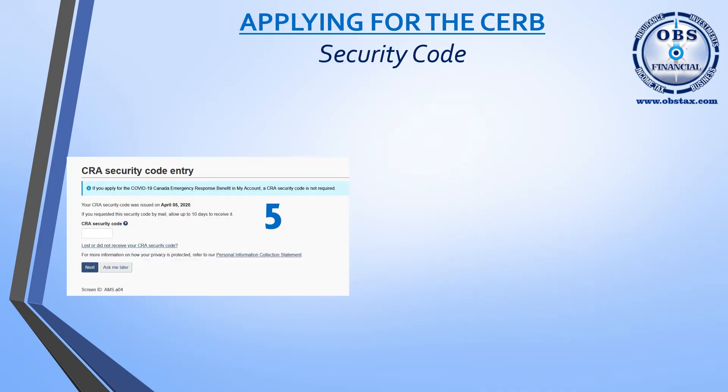Once you enter your login and get in, if you haven't been to the CRA site before, they're going to ask you for a security code. That security code would have been issued to you when you registered for My Account or when you re-registered. The code is mailed out to you and it could take five to ten days. However, the Canada Revenue Agency is allowing people to apply for the CERB and giving them limited access to their My CRA site until the security code arrives. If you know your security code, enter it now; if not, select 'Ask Me Later' and you'll be advanced to the next screen.